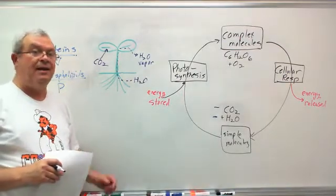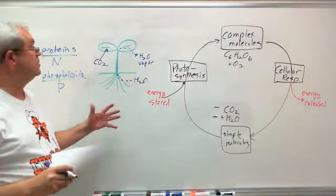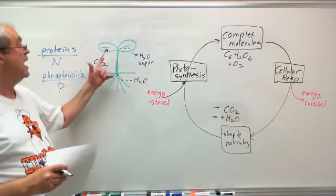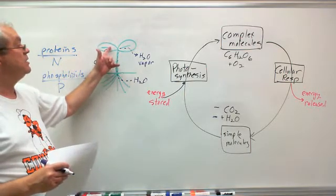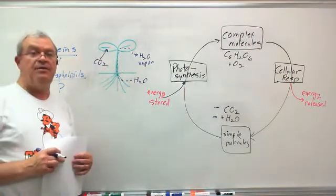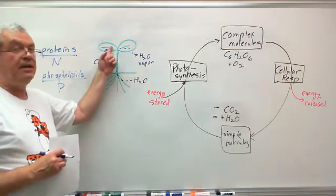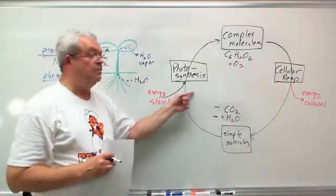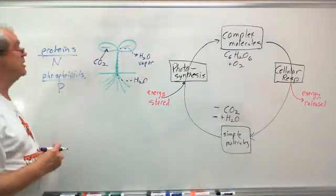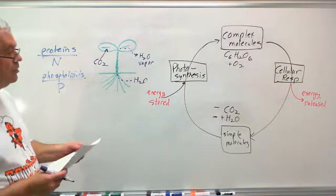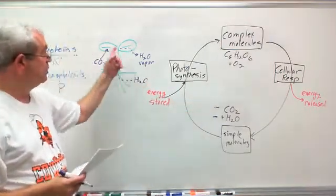And so, what would make it diffuse inward? It has to do with concentration, right? The concentration would have to be higher outside the leaf, then inside the leaf. What would make the concentration of CO2 higher on the outside? Well, it's being used up on the inside. Being used up by what? Being used up by photosynthesis. There you go. So, that's how those two things, CO2 and H2O, get to a leaf.